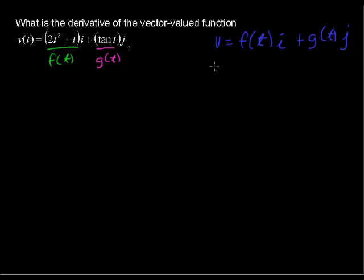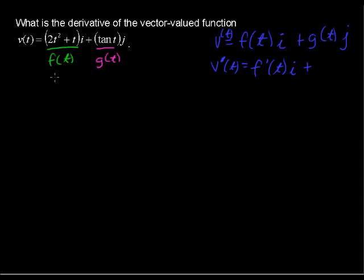Now, if I wanted to take the derivative, then v prime of t equals — it's just the derivative of each of these components. So, f prime of t times i — we'll take the derivative of what's in green there — plus g prime of t times j, what's in purple there.